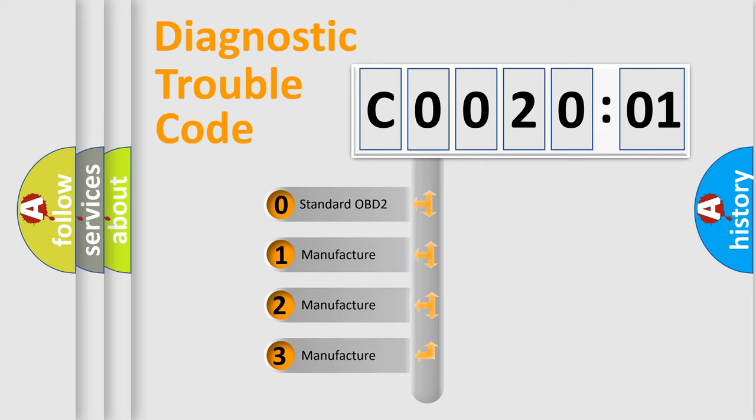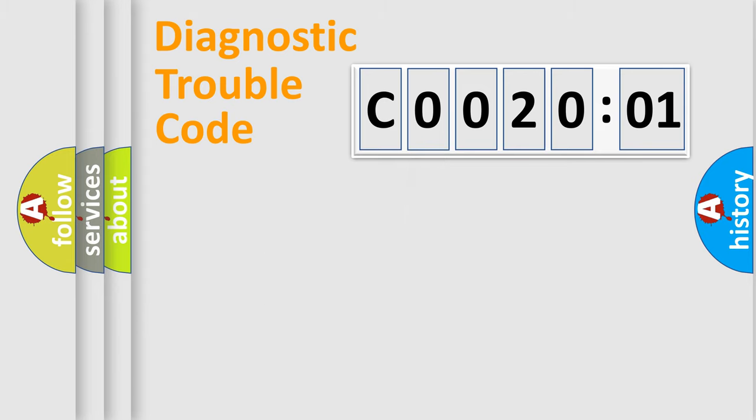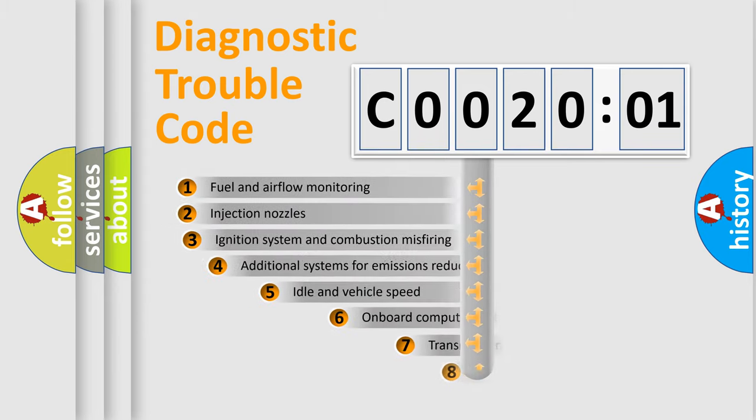If the second character is expressed as zero, it is a standardized error. In the case of numbers 1, 2, 3, it is a manufacturer-specific expression of the car-specific error.